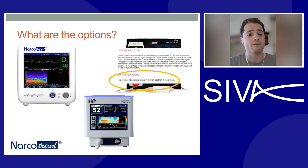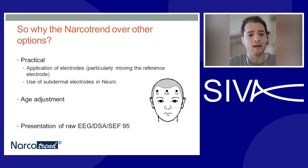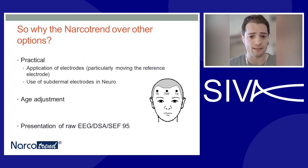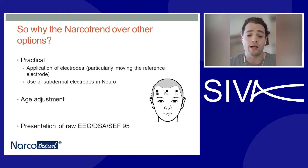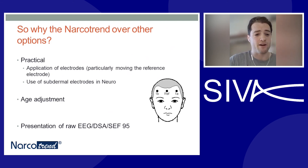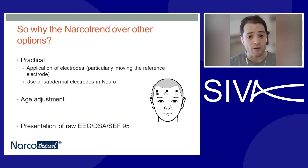I have personally chosen the Narcotrend for several advantages. Practically, the electrodes have a relatively small footprint and can be repositioned — from the forehead to the mastoid processes — with the reference electrode placed anywhere over a bony surface, freeing up valuable space on the child's forehead. Subdermal electrodes can also be used, which I find particularly useful doing neuro cases. The algorithm has a specific age adjustment, and the presentation of the raw EEG, density spectral array, and spectral edge frequency is best in class. Additionally, the electrodes are identical for adults and paediatrics, so there is no additional expense for paediatric patients.